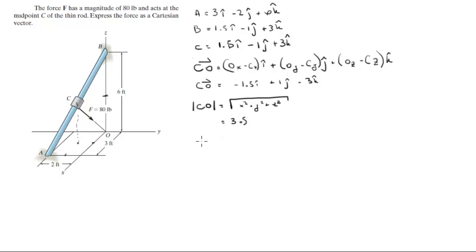And basically what you do is to find the unit vector CO, you divide the vector CO over its magnitude.